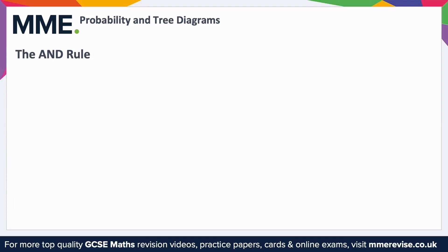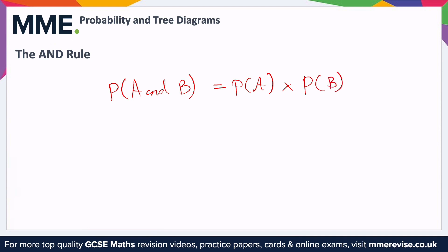The AND rule states that if two events A and B are independent, then the probability of A and B happening is the probability of A times the probability of B. Remember, this only works if they are independent — meaning one happening doesn't affect the other happening.